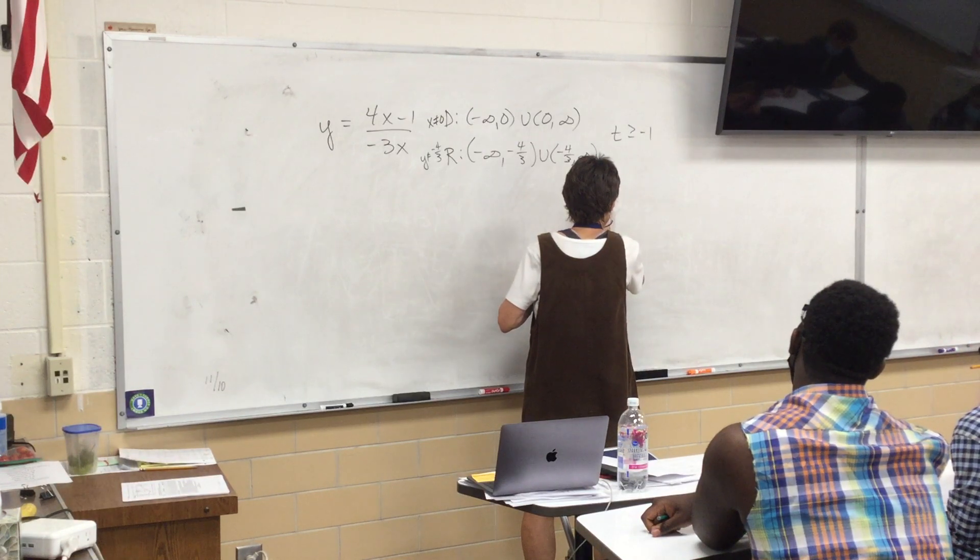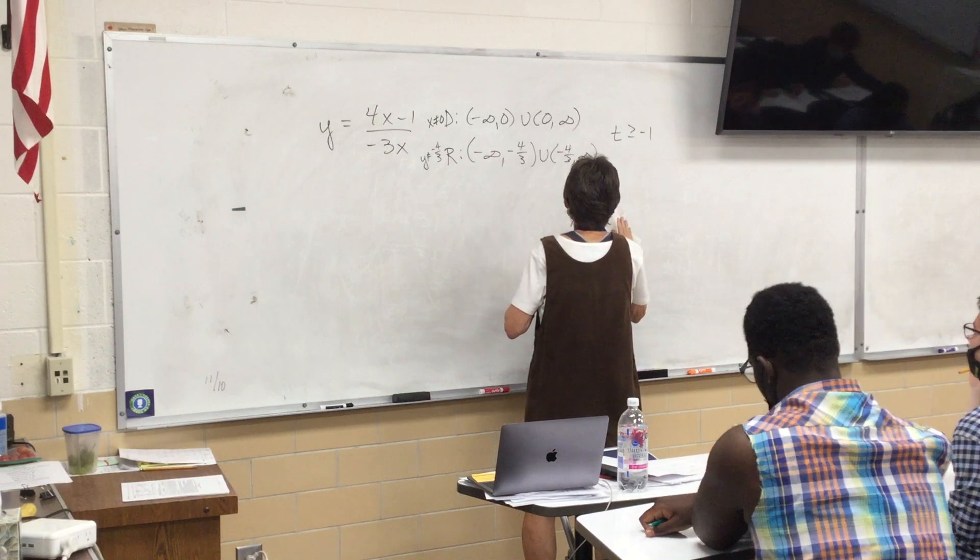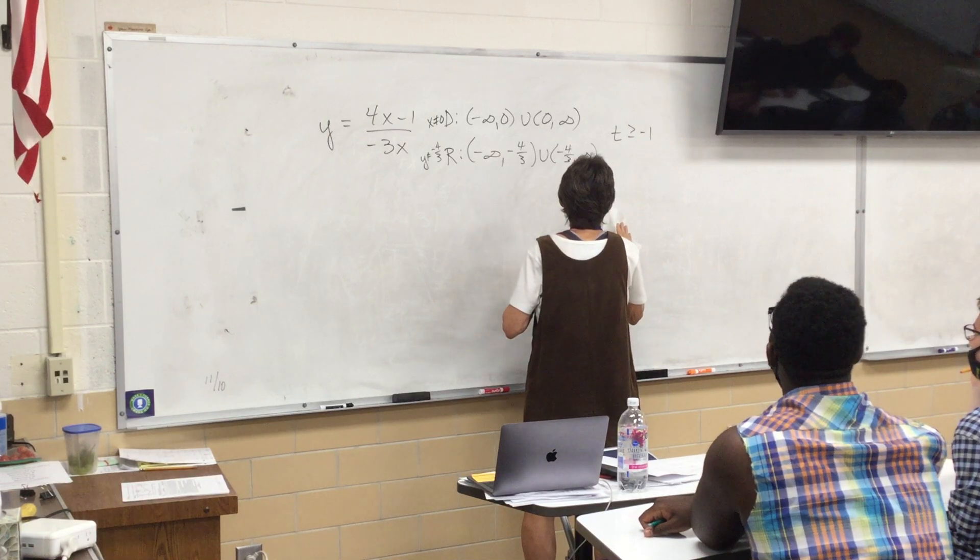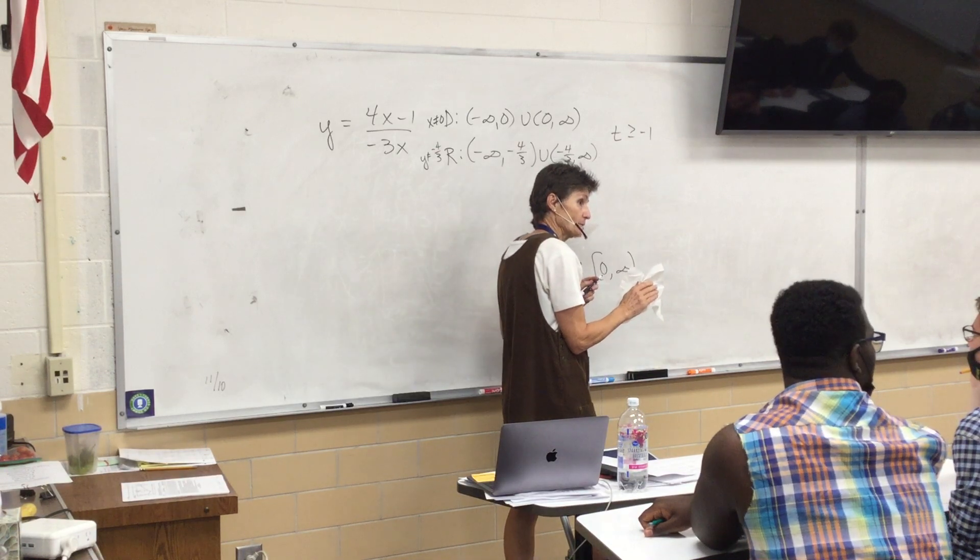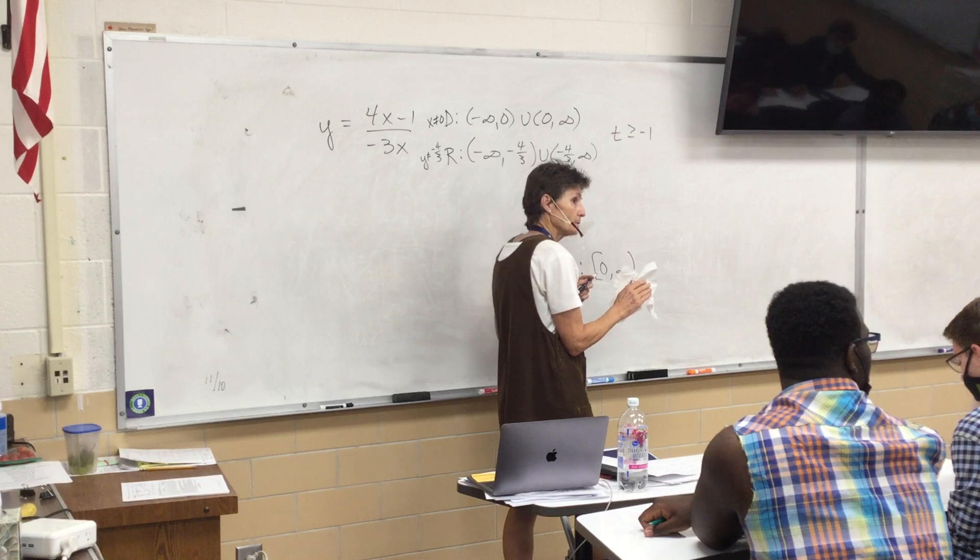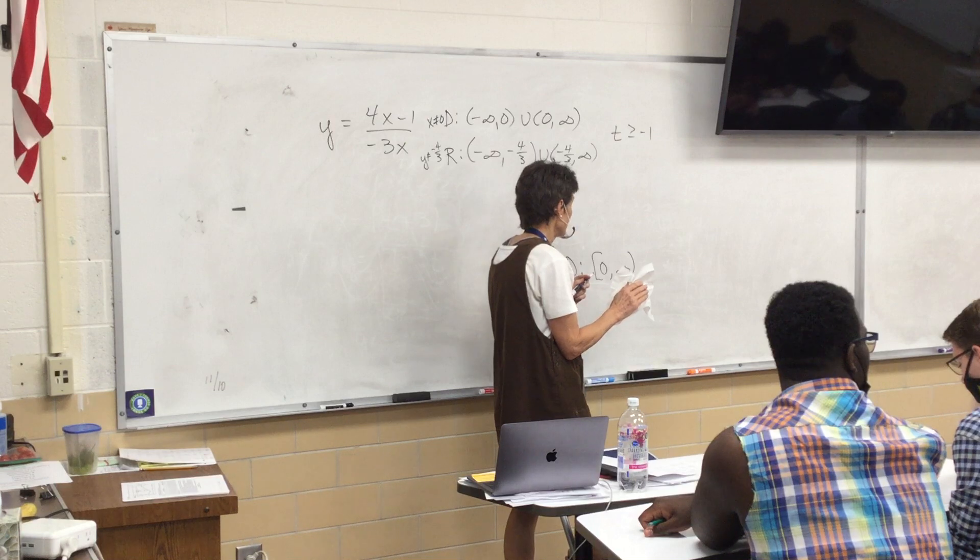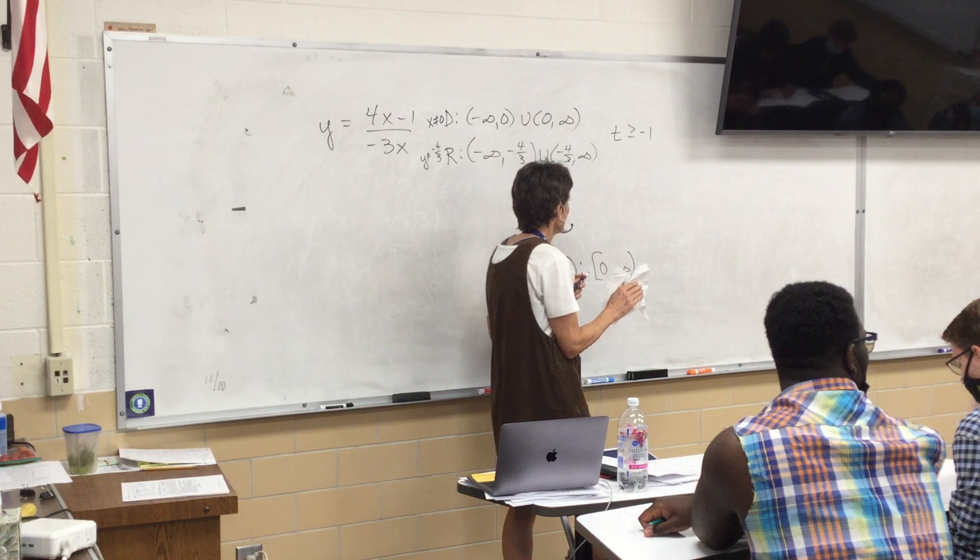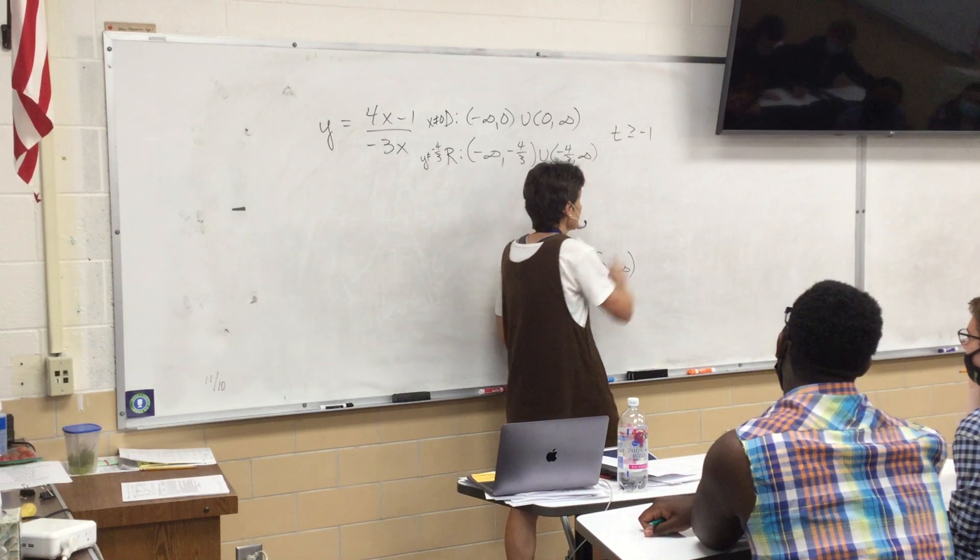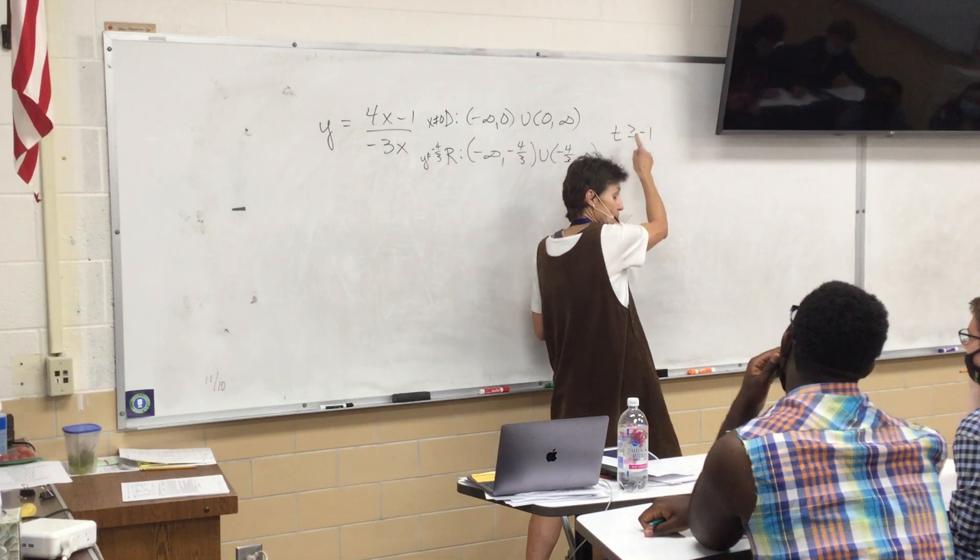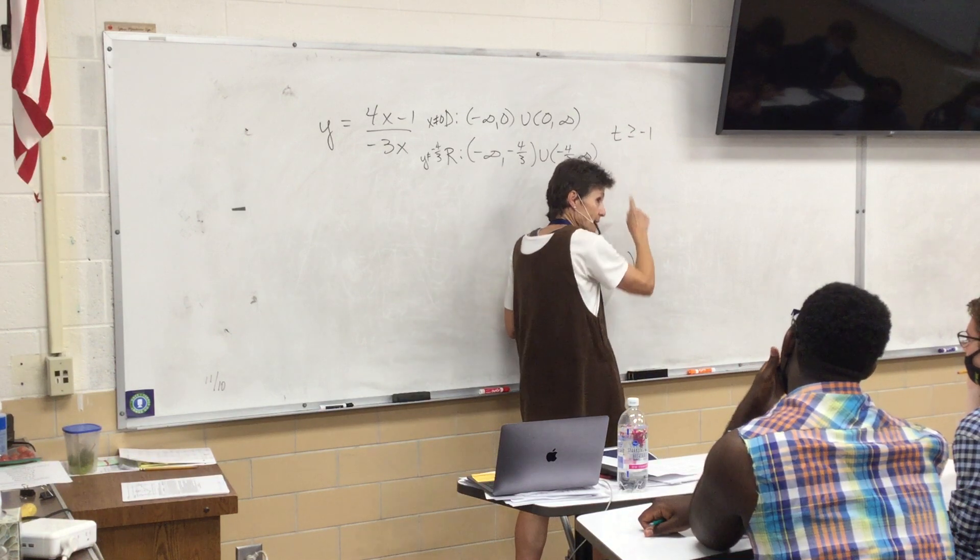I have a question about the last problem. Would it be negative 1 on the domain? Because it's t plus 1 under the radical. So, if it was negative 1, you'd still have 0. Well, you're allowed to have 0 under a radical. I know, but if you put 0, like if you put negative 1, you would still end up with 0 under the radical. Would it be bracket negative 1?